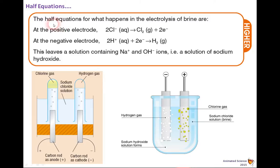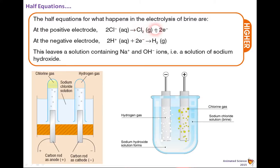Here we look at the half equations again for the electrolysis of brine. At the positive electrode (anode), we've got 2Cl⁻ → Cl₂ + 2e⁻. You could do it in a simple beaker and let the gases bubble off, but the problem is they intermingle, so it's much easier to do it upside down. The chlorine gas is Cl₂, but you've got to add two electrons to balance it. At the negative electrode (cathode), hydrogen H⁺ comes off due to the reactivity series: 2H⁺ + 2e⁻ → H₂ gas. That leaves a solution containing Na⁺ and OH⁻ ions, which of course forms sodium hydroxide, which is alkaline.